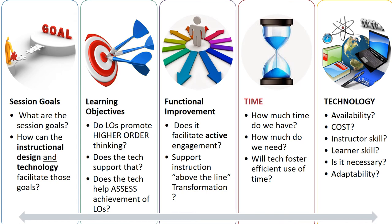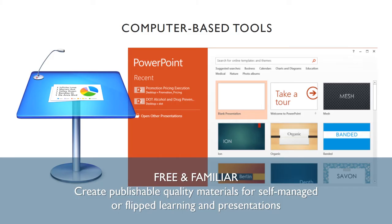You might have noticed that this whole process follows the idea of backward design. You look at the session goals first, make sure your learning objectives connect back to those, and ensure you're building in functional improvement in terms of your use of technology. Make sure you've got enough time and that the tech will foster an efficient use of time. You also need to think about tech availability, the cost, the instructor skill, learner skill, whether it's really necessary to use any type of technology and for which part of the session, and whether there's a way to make that technology adaptable.